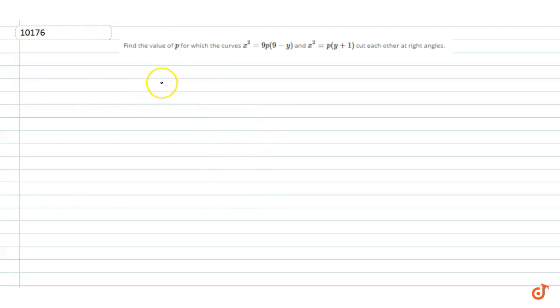Here we have the equation of the curves: x² = 9p(9-y). Differentiating, the slope of the curve is given by 2x = d/dx of 9p(9-y).